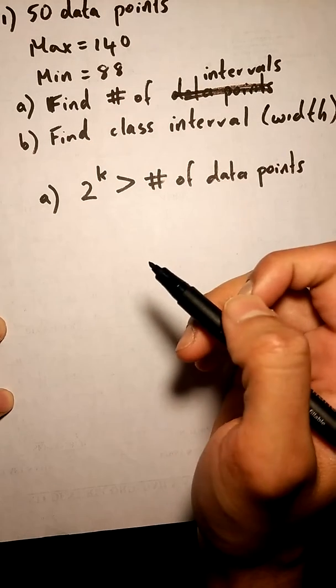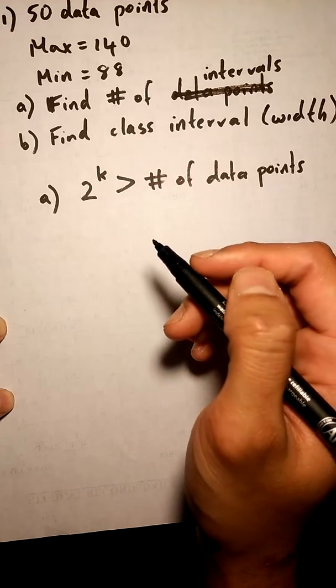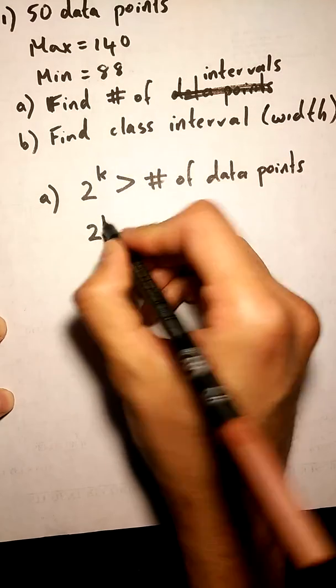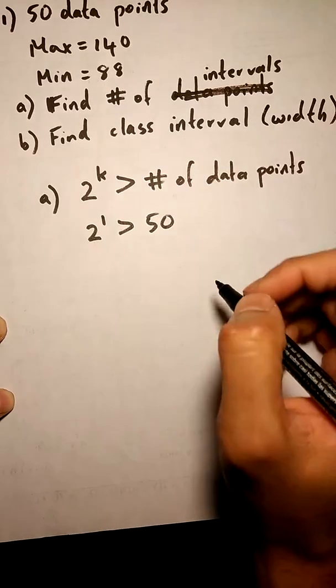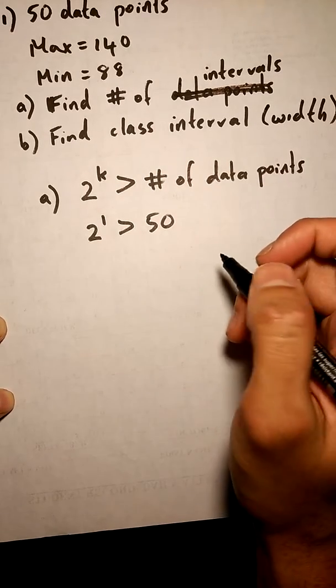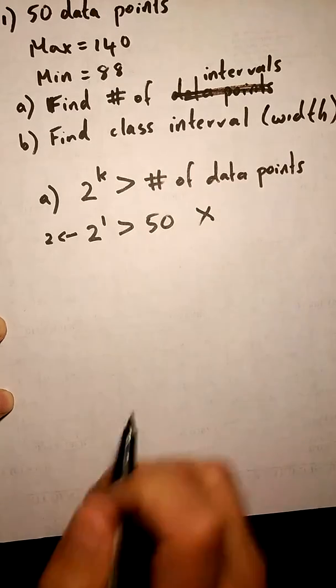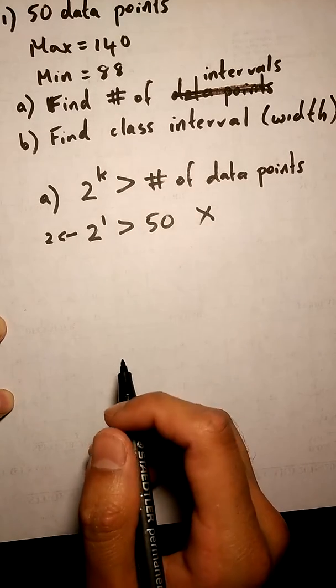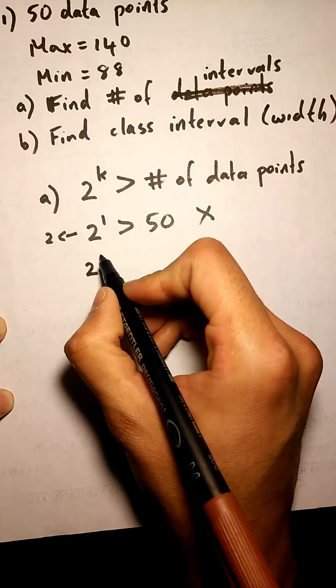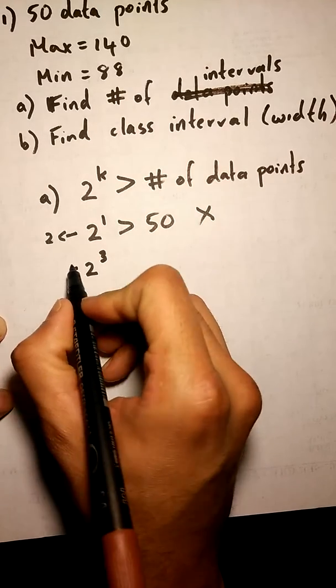I'm going to start with 2 to the power of 1. Is that true or false? Well, 2 to the power of 1 is just 2. That's not greater than 50, so we try a higher number. Let's say, for example, I try 2 to the power of 3. Is that greater than 50? Not really.